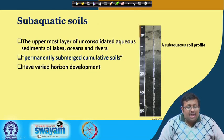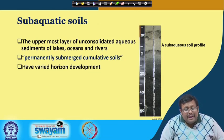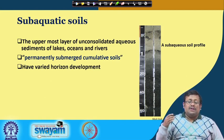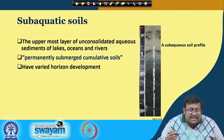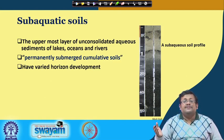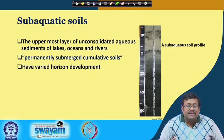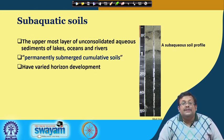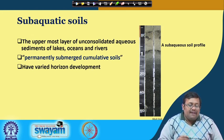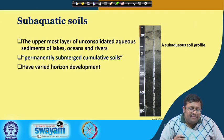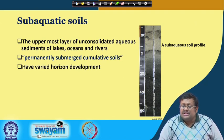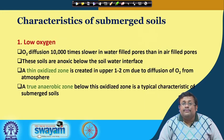Another type is subaquatic soil. The uppermost layer of unconsolidated aquatic sediments of lakes, oceans, and rivers are called subaquatic soils. They are permanently submerged cumulative soils with varied horizon development.